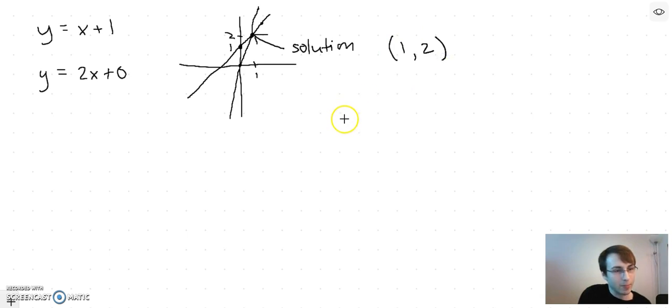The reason that's the solution is because you plug it into both of them and it works. You get 2 equals 1 plus 1, I think, and 2 equals 2 times 1 plus 0. That works as well.